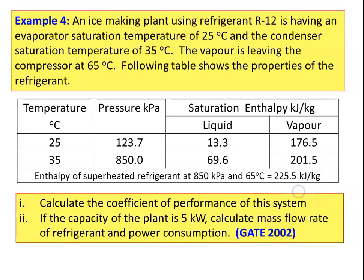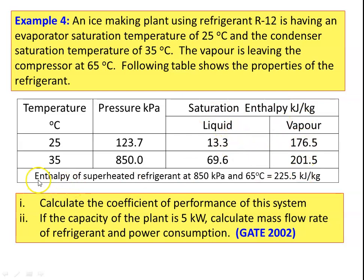We will take Example 4. An ice making plant using refrigerant is having an evaporator saturation temperature of 24 degrees Celsius and the condenser saturation temperature of 34 degrees Celsius. The vapor is leaving the compressor at 65 degrees Celsius. The following table shows the properties of the refrigerant at 25 degrees Celsius evaporator temperature and 35 degrees Celsius condenser temperature — the saturation enthalpy of the liquid and saturated enthalpy of the vapor. The enthalpy of superheated refrigerant at 65 degrees Celsius is 225.5 kilojoules per kilogram.